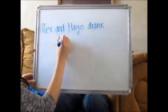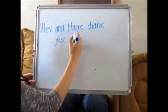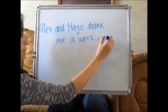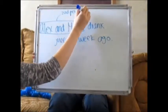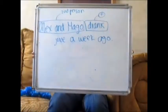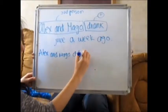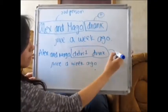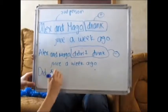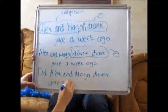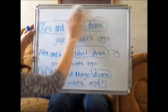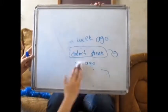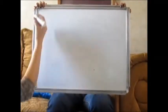Another example for second person is: Alex and Mago drank juice a week ago. We use drank for the verb in past. In the negative form it will be: Alex and Mago didn't drink juice a week ago. And in the interrogative form: did Alex and Mago drink juice a week ago? In the negative and interrogative form we don't change the base form of the verb.